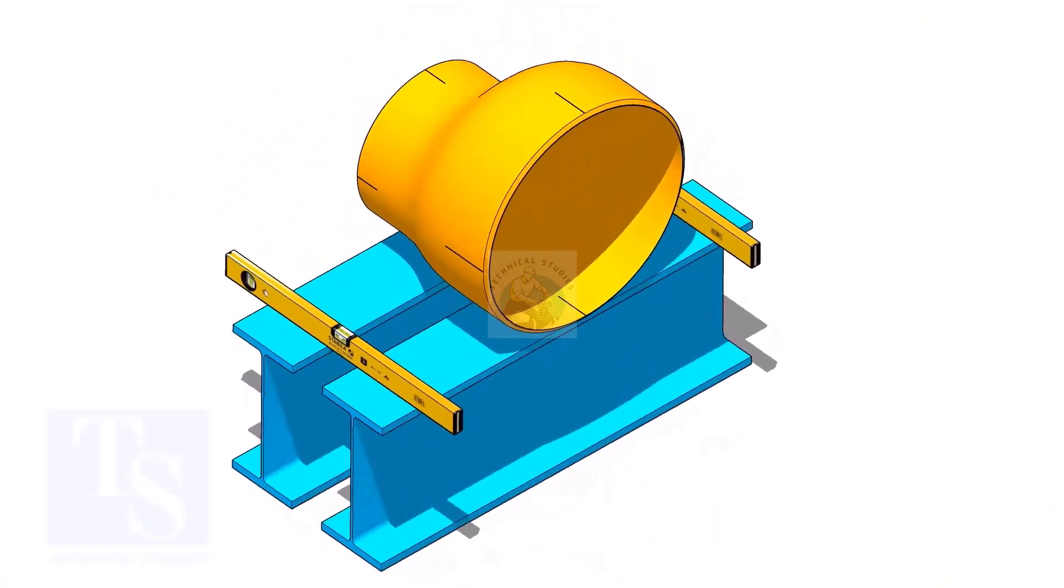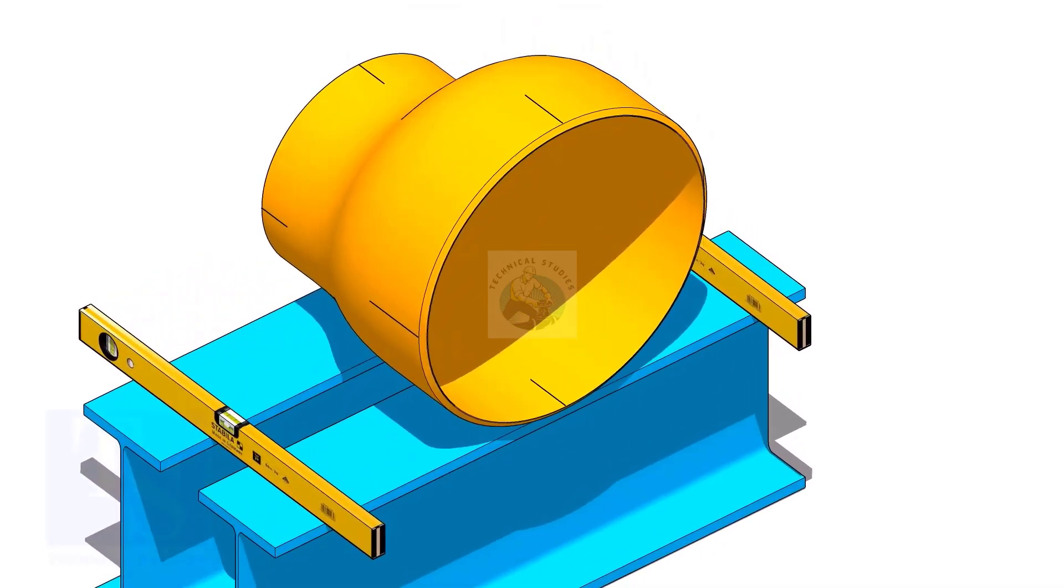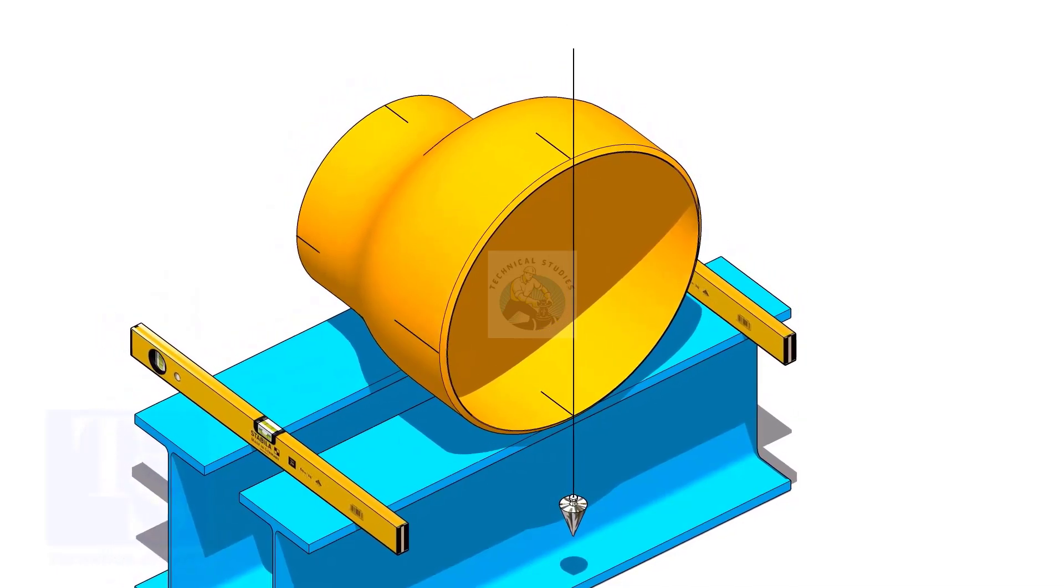Put the reducer on supports. Plumb the reducer and put packing on both sides.